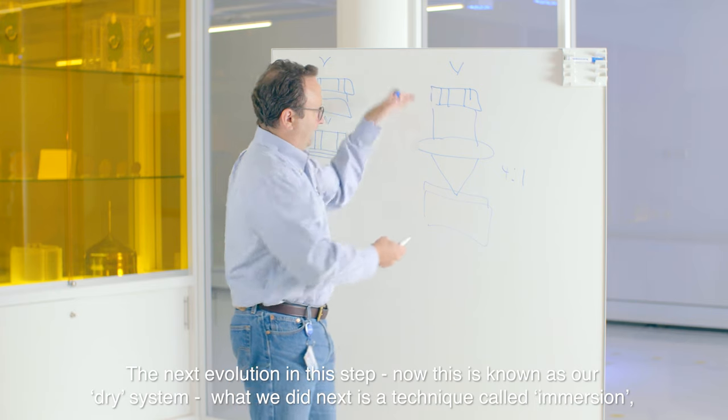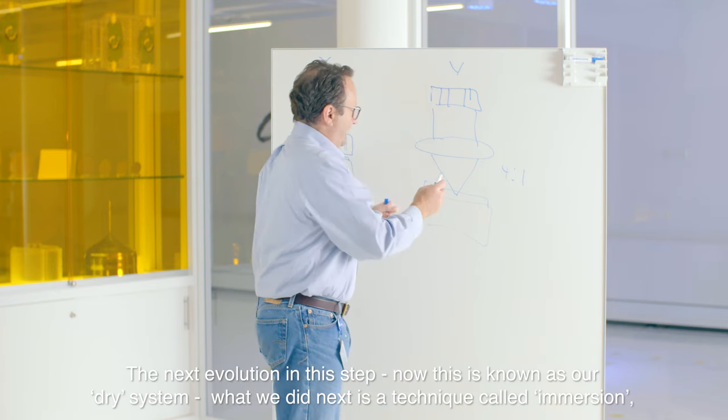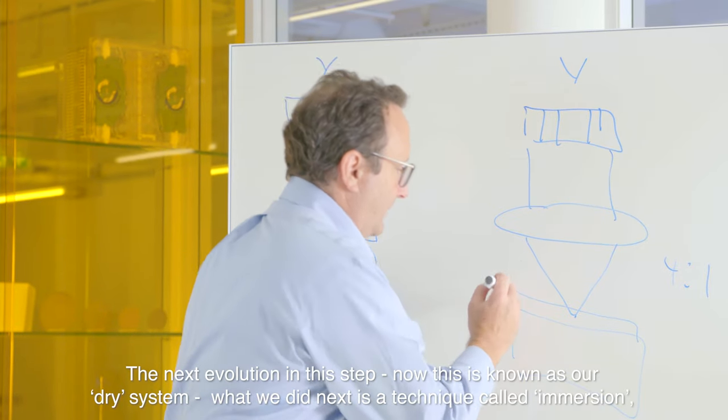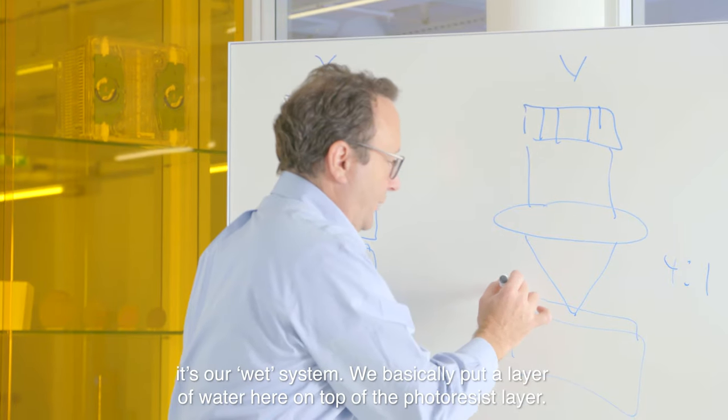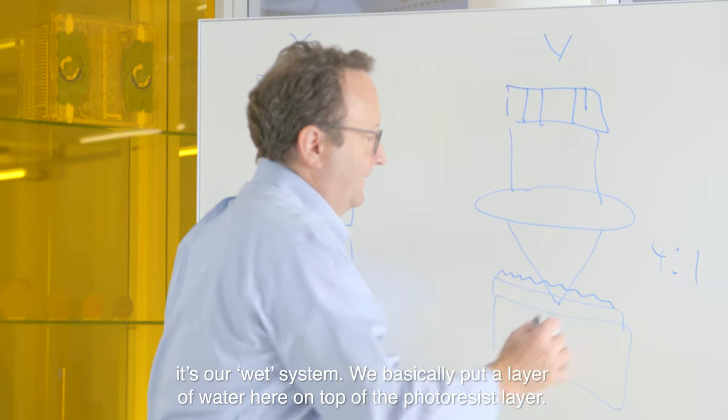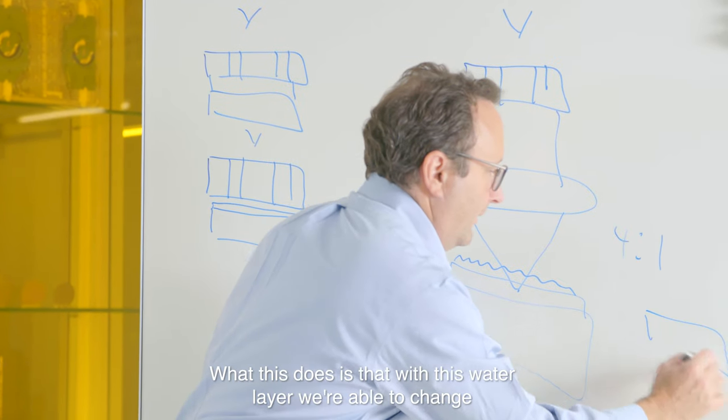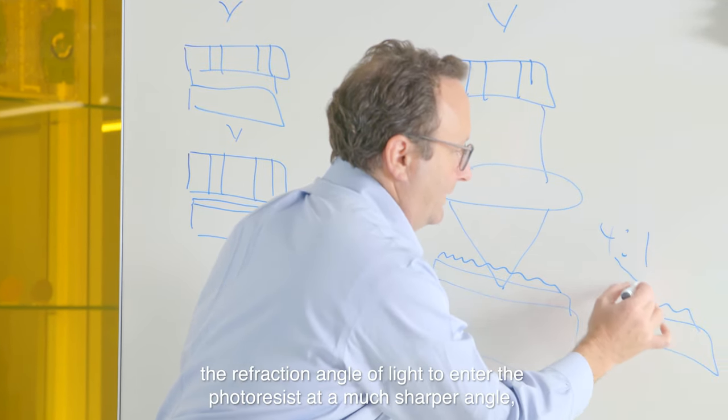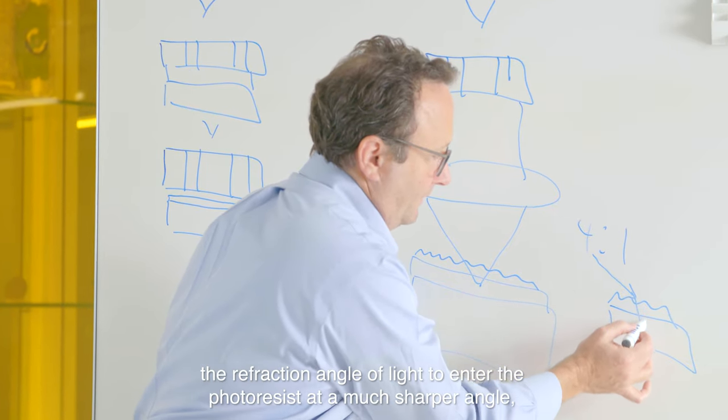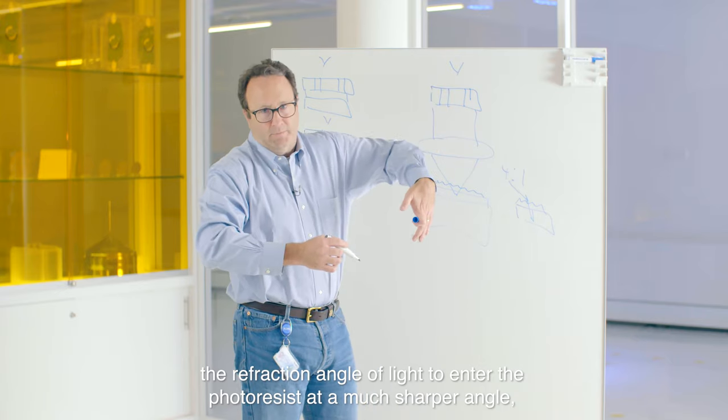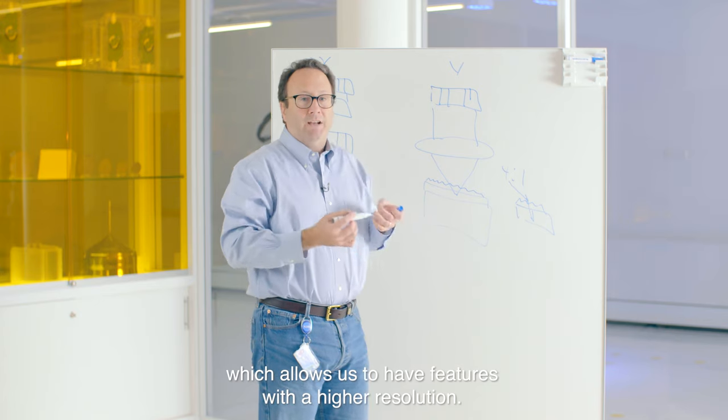The next evolution in this step—now this is known as our dry system—what we did next is a technique called immersion. It's our wet system. We basically put a layer of water here on top of the photoresist layer. What this does is with this water layer, we're able to change the refraction angle of light to enter the photoresist at a much sharper angle, which allows us to have features with a higher resolution.